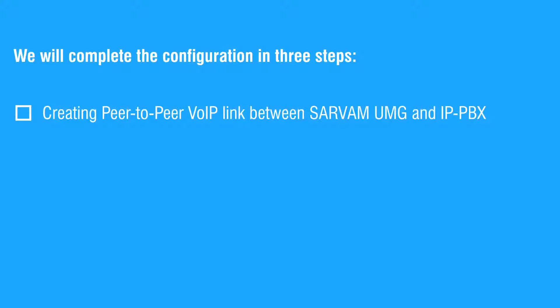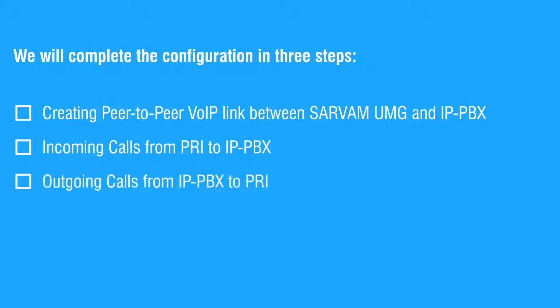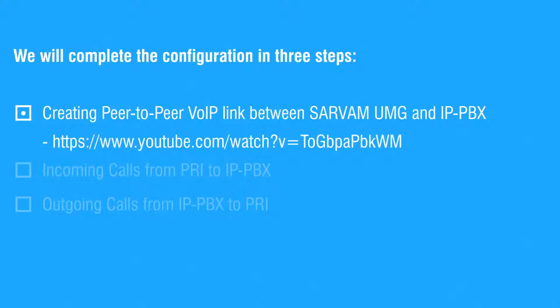Let us see the configuration. We will complete the configuration in three steps: first, creating a peer-to-peer VoIP link between Servum UMG and the IP PBX; second, configuring incoming calls from PRI to IP PBX; and third, configuring outgoing calls from IP PBX to PRI. To know how to create a peer-to-peer VoIP link, see our video 'Peer-to-peer Calling in Servum UMG'.